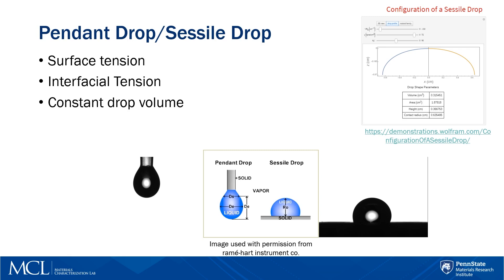But what happens when we don't know the surface tension values of the liquids used for the measurements? In this case, we can use a technique called pendant drop and sessile drop to gain more information about the surface tension. Both methods analyze the shape of the drop, either as it hangs from the syringe tip or as it sits on a solid surface. On the bottom of the screen is a diagram paired with the actual images from our instrument. We have the ability to feed back off of the volume calculated in the live image to keep a constant drop volume.